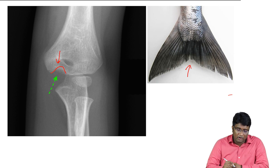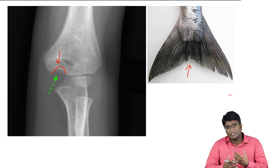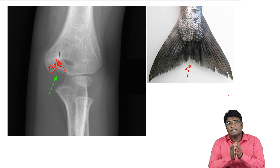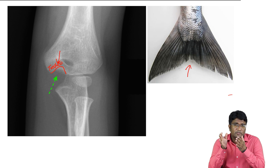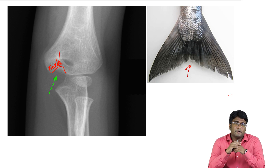In a patient with a supracondylar or any distal humerus fracture, there could be a vascular injury. It is not the lateral condyle of the humerus — it is the lateral aspect of the trochlea. The trochlea articulates with the ulna; the capitulum articulates with the radius. It is the lateral aspect of the trochlea that resorbs, producing this fish tail deformity due to a vascular injury after trauma to the distal humerus.